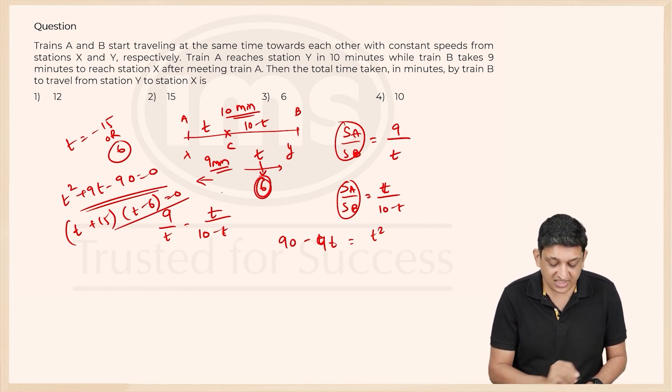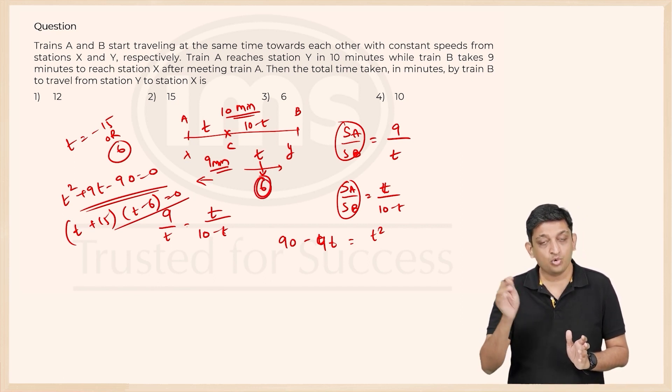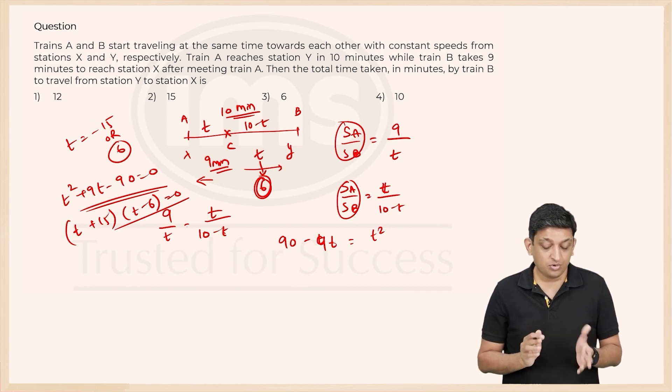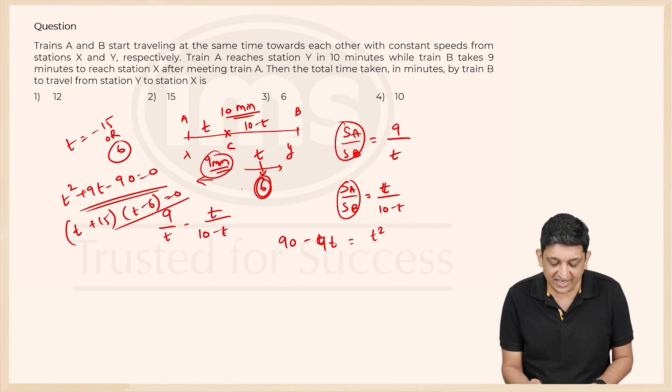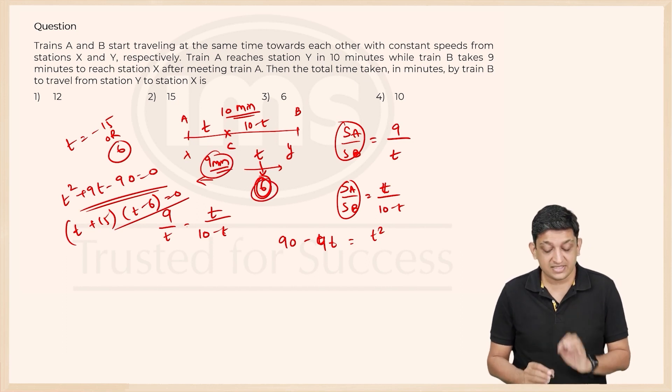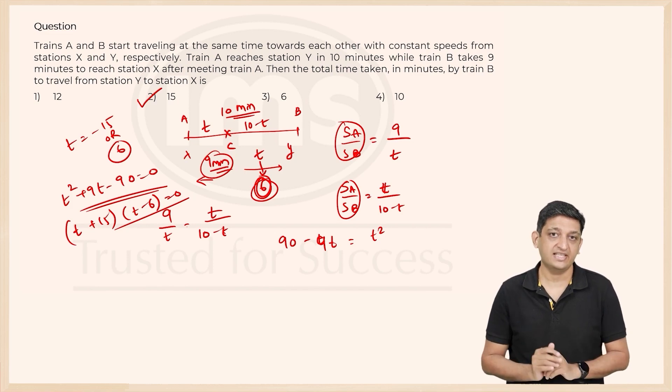So 6 units is what it took for train B to go from Y to C. 9 units is what it took train B to travel from C to X. So cumulatively it would have covered the entire distance in 9 plus 6 or 15 minutes to go from station Y to station X.